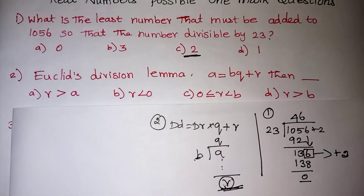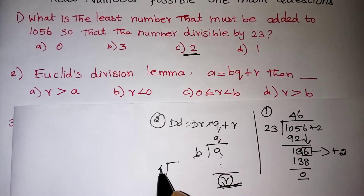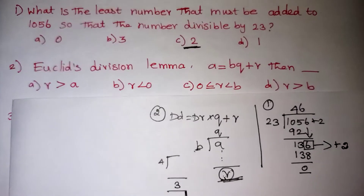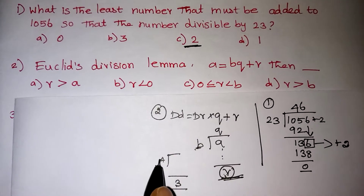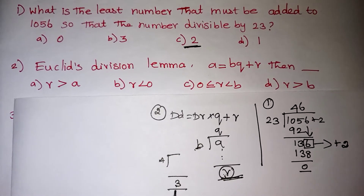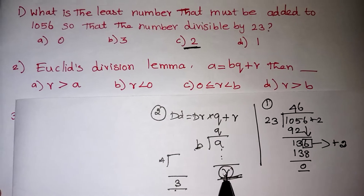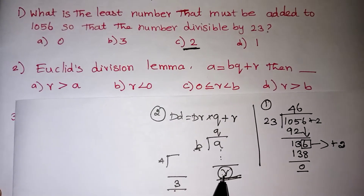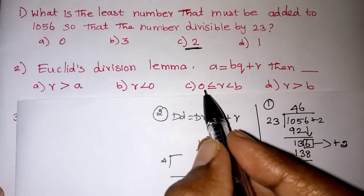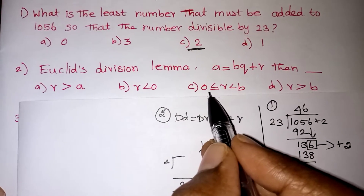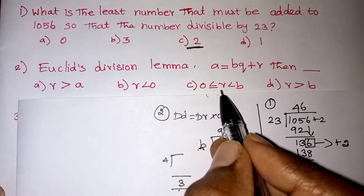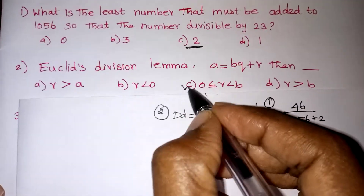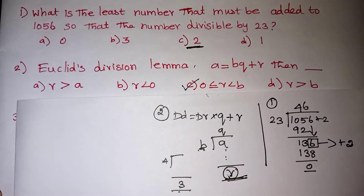For example, if you are dividing by 4 and you reach a remainder of 3, we stop the division because 3 is smaller than 4. The remainder value should be less than b, or it can be 0. The correct condition is: remainder can be equal to 0 or greater than 0, but it must compulsorily be less than b.